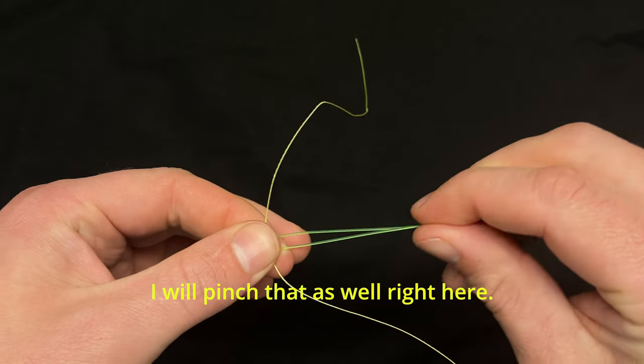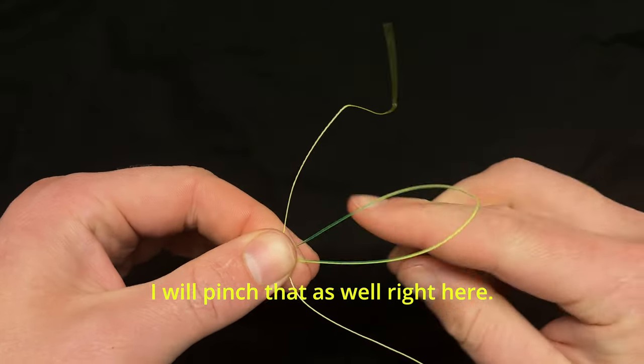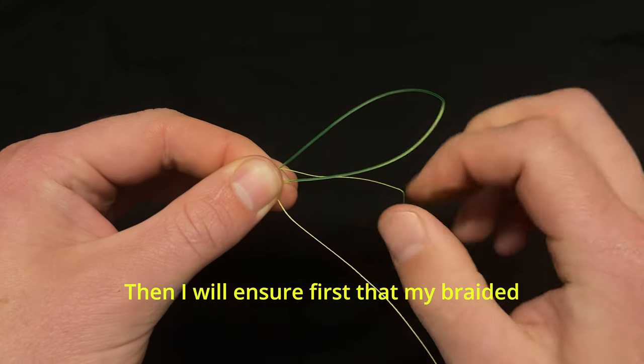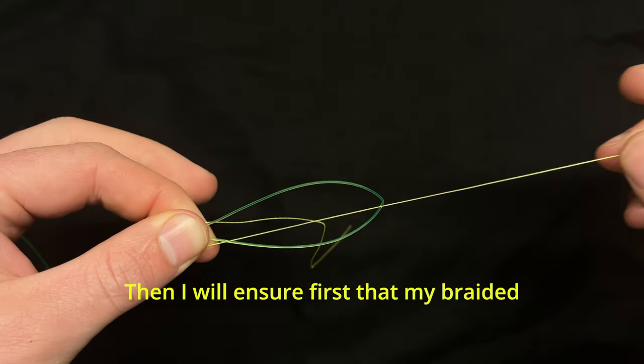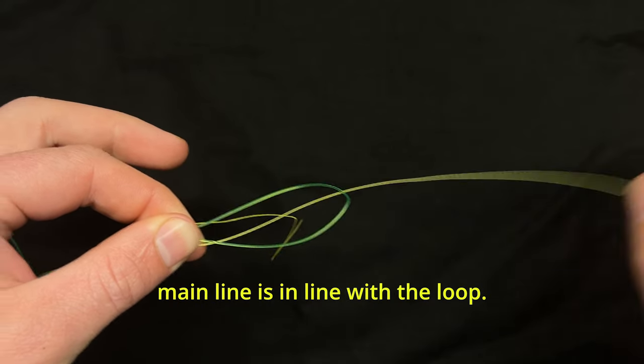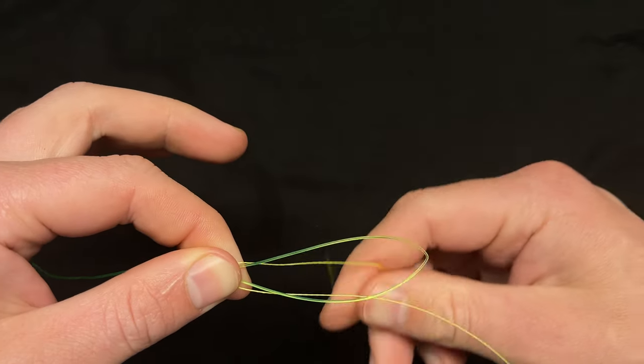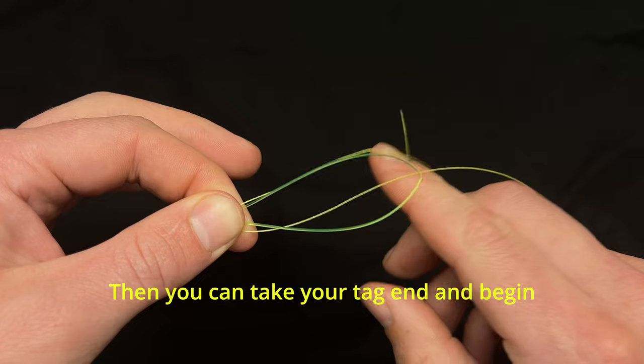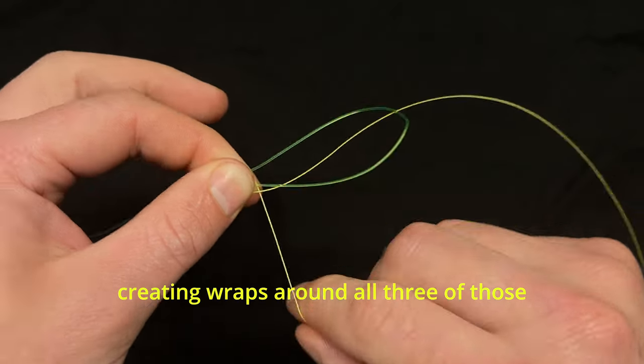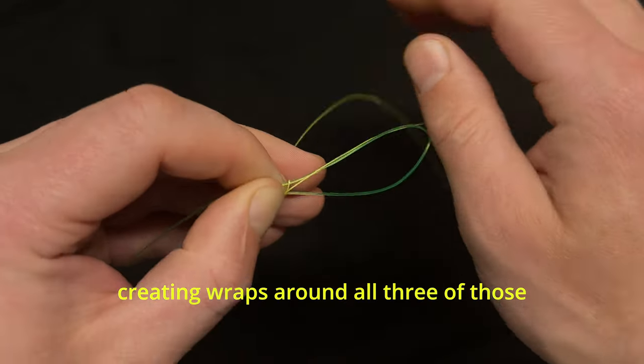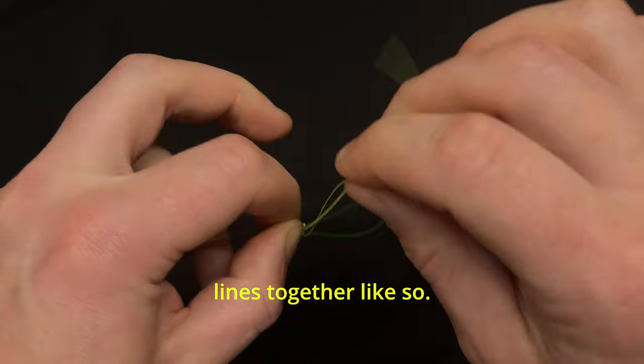Then I will ensure first that my braided main line is in line with the loop. Then you can take your tag end and begin creating wraps around all three of those lines together.